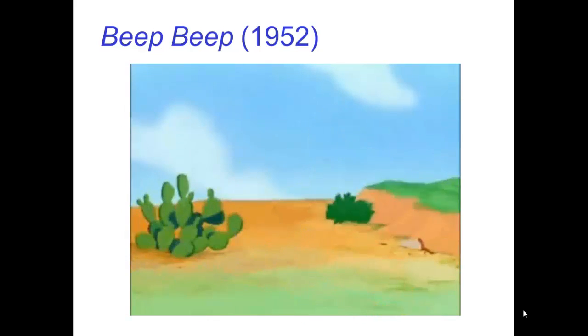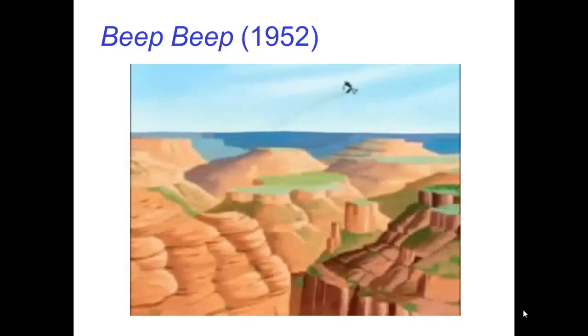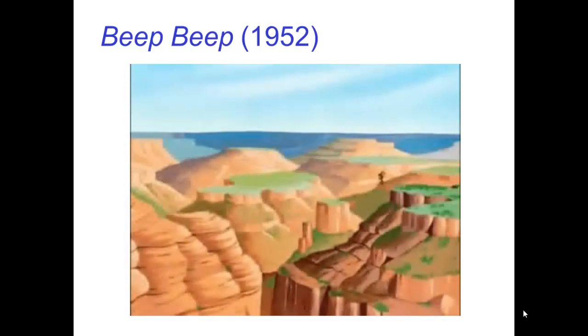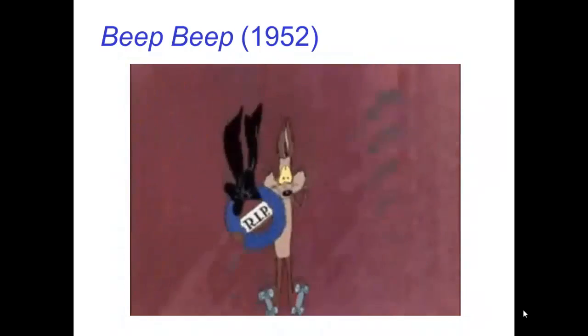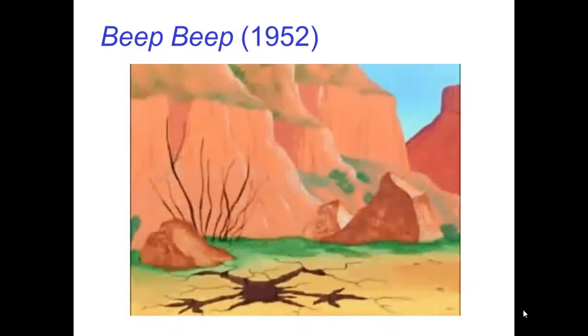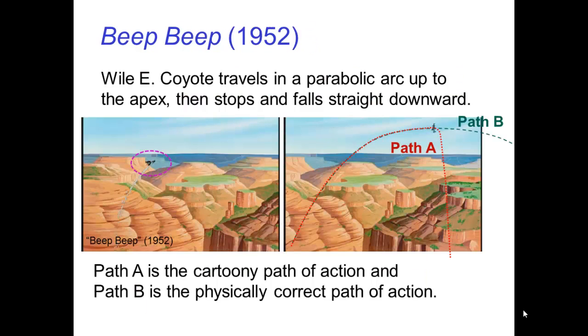Let's look at Wile E. Coyote's path of action in this clip from Beep Beep. Now, Wile E travels in a parabolic arc up to the apex, then stops and falls straight downward. Path A is the cartoony path of action, and path B is the physically correct path of action.